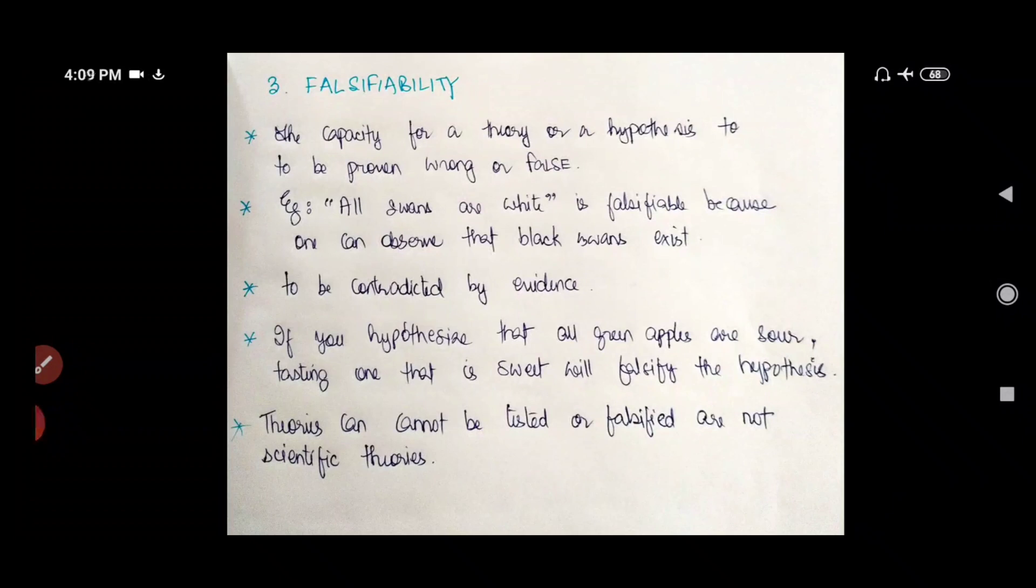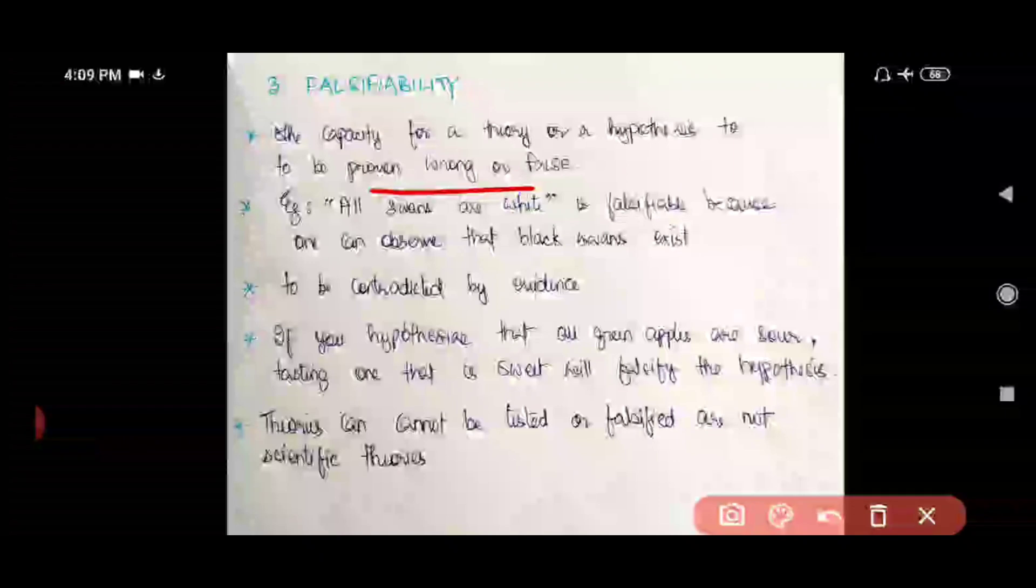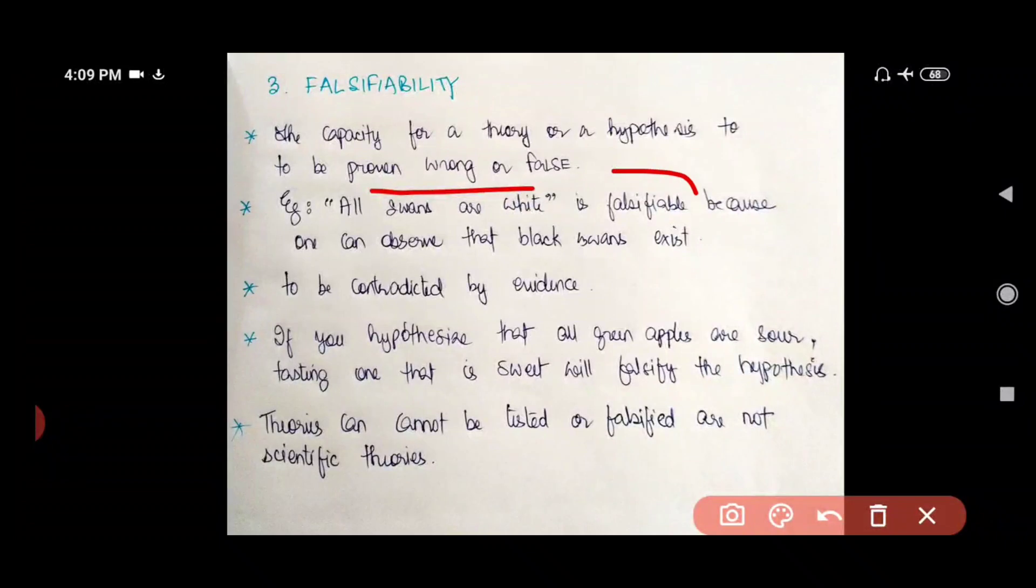Example, let's say all swans are white. But is it true? No, right? This statement is falsifiable. Why? Because one can observe that black swans exist. It's not only white swans that exist. But there are black swans.